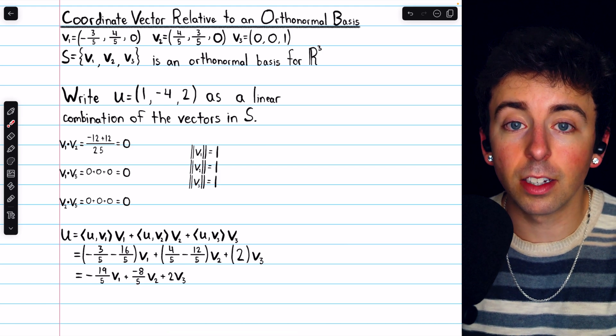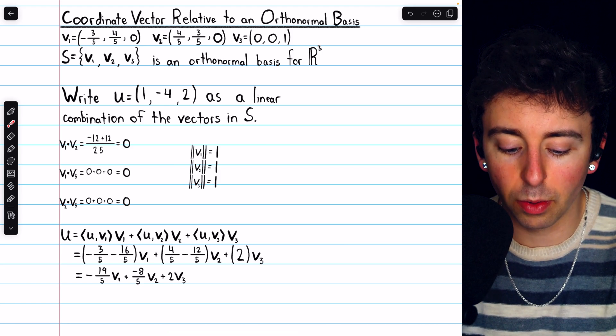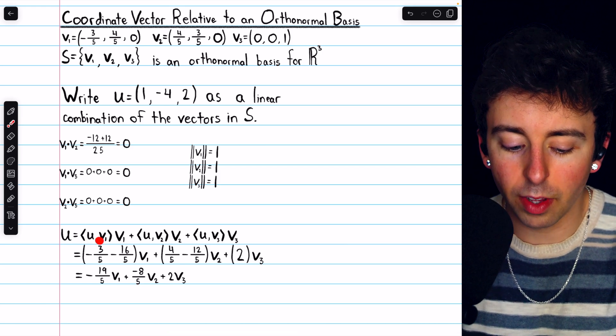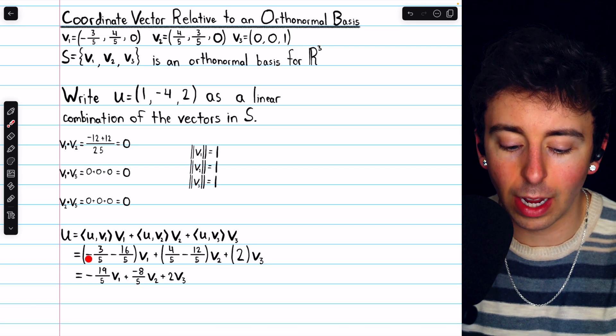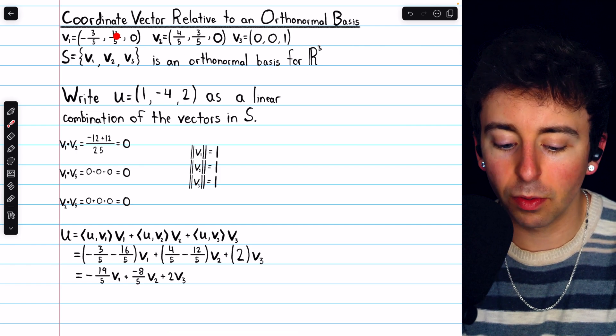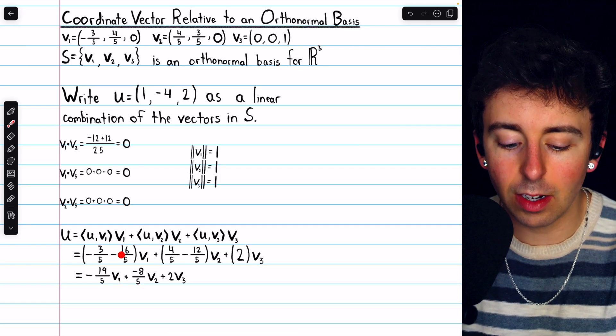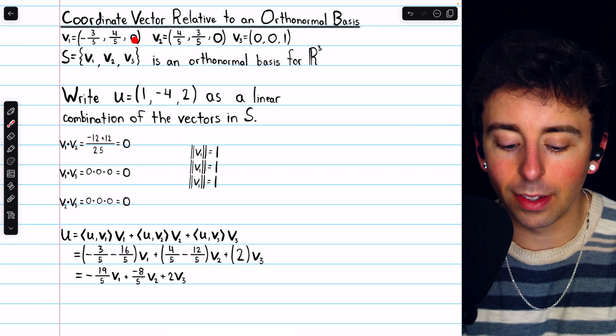The inner product here is the dot product, so we just have to do those computations. For u dot v1, for example, we have 1 times negative three-fifths, so negative three-fifths, plus negative 4 times four-fifths, so minus 16-fifths, and the last term would be 0.